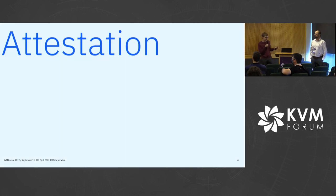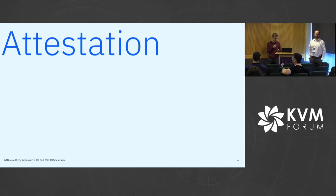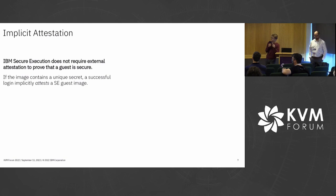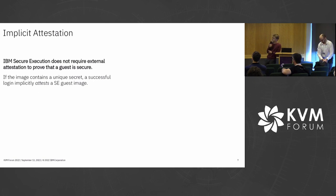Now for attestation. Our goal is to prove that a given guest runs the expected workload in secure execution mode. With IBM secure execution, we more or less get that for free. We do not require external attestation because our components are encrypted and integrity protected. If we inject a unique secret during the build of that image — for example, an SSH public key that's unique to this image — we can attest that image by simply logging in, because no one else has that public key.